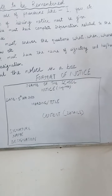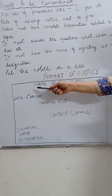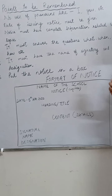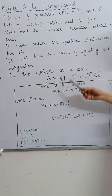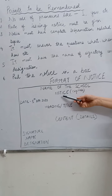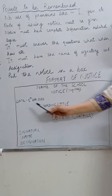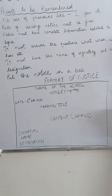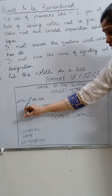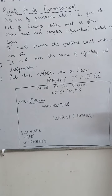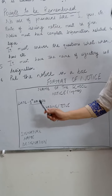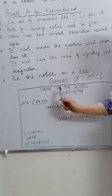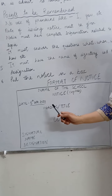Always remember that all the headings — that is the name of the school, the word NOTICE, and the heading or title — these three headings should always be in capital or bold letters. At the very left-hand corner of the next line, you have to write the date. The date has a certain format — for example, 5th April 2020. You have to write the date in this way only.